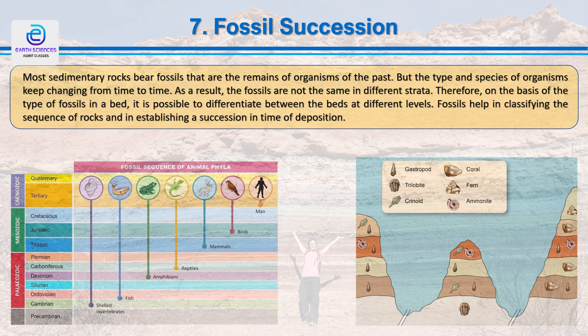Most sedimentary rocks bear fossils — the remains of organisms of the past — but the type and species of organisms keep changing from time to time, and evolution is generally prograde in nature. Analyzing rocks of older sequences yields simpler organisms, while younger sequences yield fossils of more evolved organisms. As seen in the diagram, shielded organisms appear in the Cambrian, fishes appeared around Cambrian to Ordovician time, and humans appeared around the Tertiary-Quaternary boundary. Rocks can therefore be correlated on the basis of their fossil content between different areas.